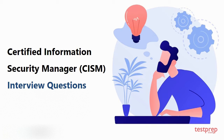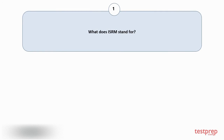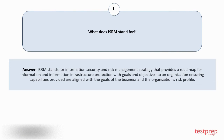Question number one: What does ISRM stand for? ISRM stands for Information Security and Risk Management — a strategy that provides a road map for information and information infrastructure protection, with goals and objectives for an organization, ensuring capabilities provided are aligned with the goals of the business and the organization's risk profile.